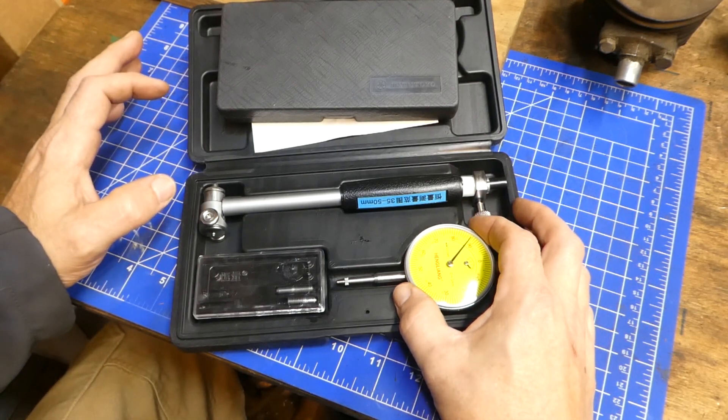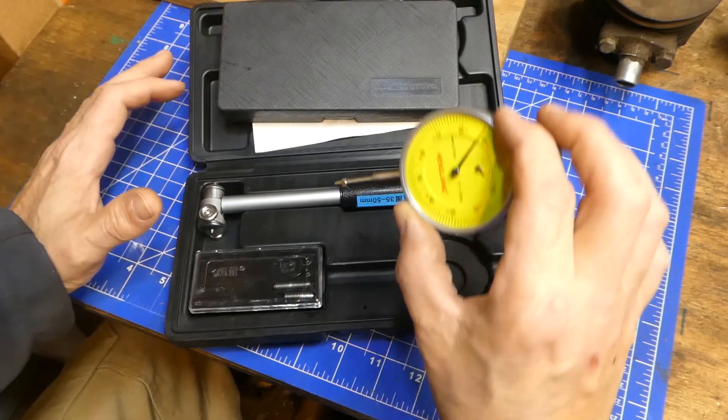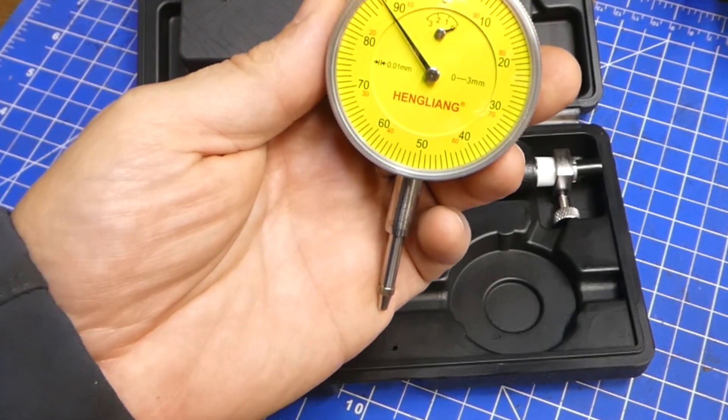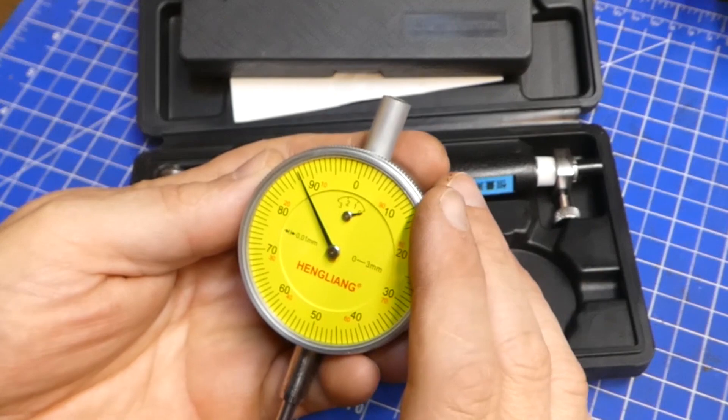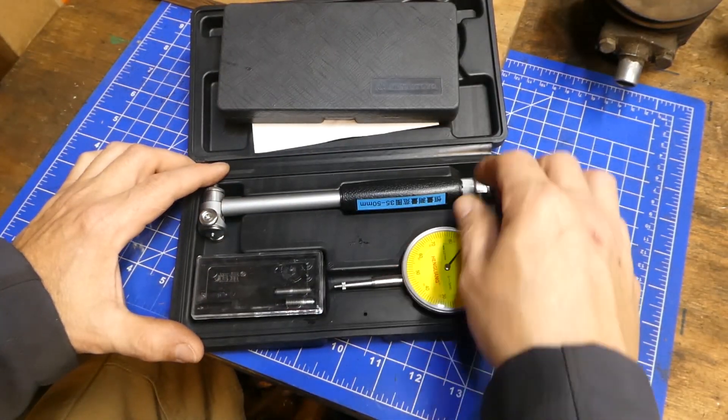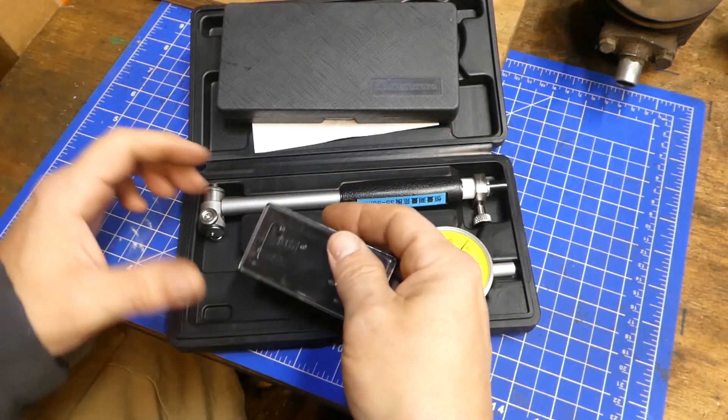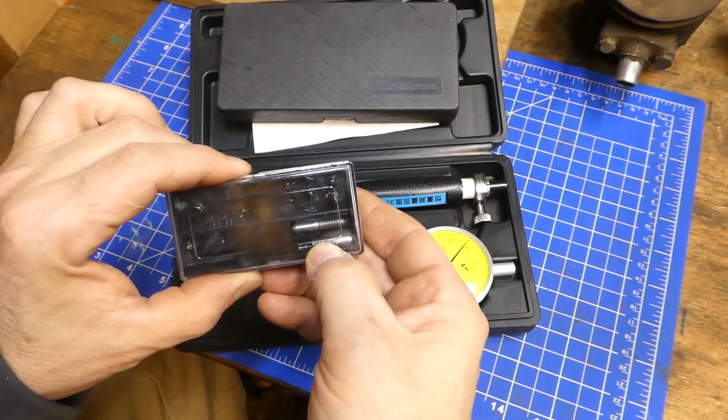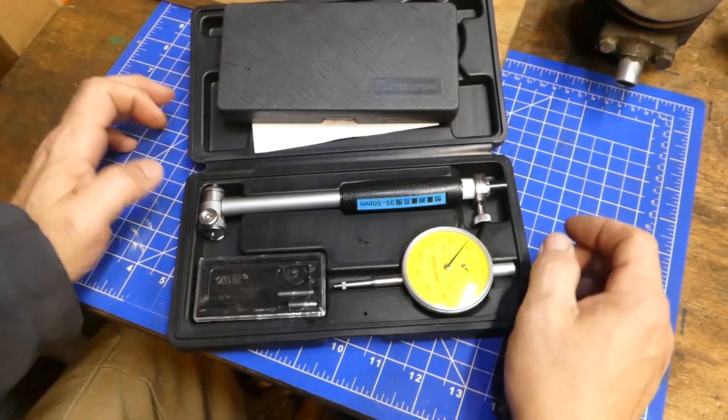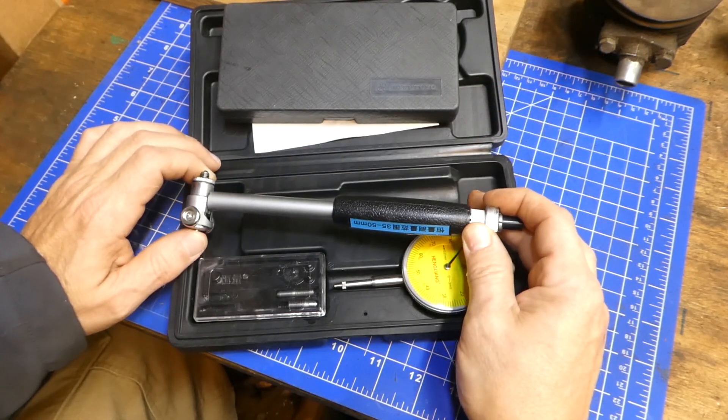This is a 35 to 50 millimeter bore gauge and it comes with a 0.01 millimeter dial indicator that is 3 millimeters overall travel. It comes with the body of the thing and a couple different anvils for different lengths. I already have the one I need in there, which is this bore is 38 millimeter, which we're going to be measuring.